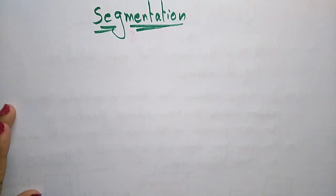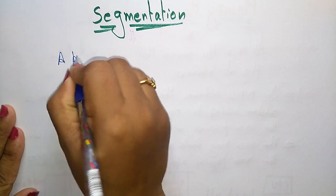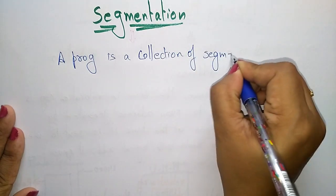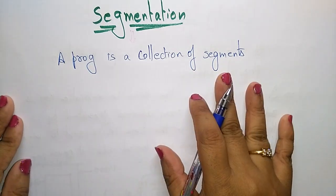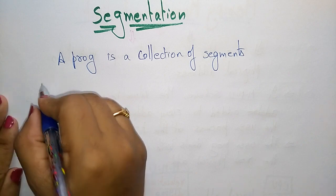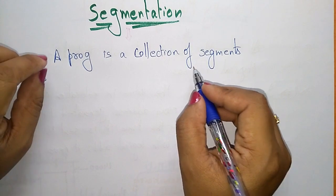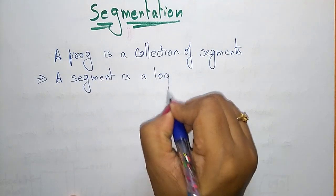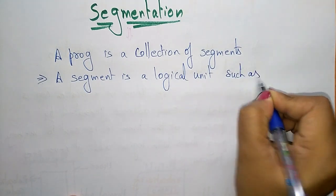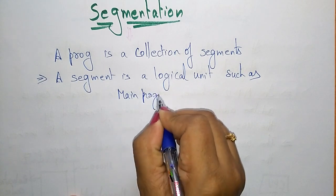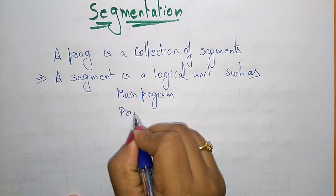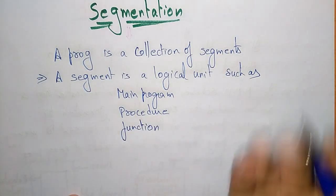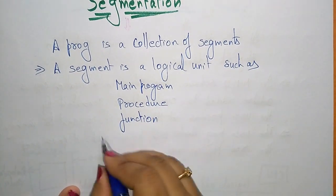A program is a collection of segments, or you can take a process — a program is a collection of segments. A segment is a logical unit. So whatever the program consists of, that program is a collection of segments. Exactly, a segment is a logical unit such as the main program. You call the main program a segment, or a procedure present in the main program is a segment, or a function which is present in the main program or outside the main program is also called a segment.